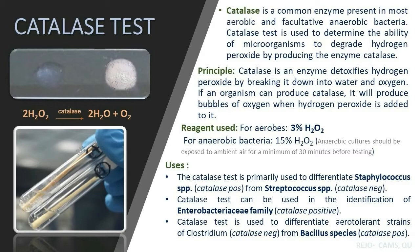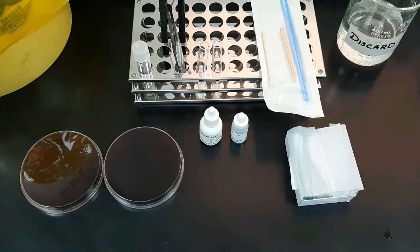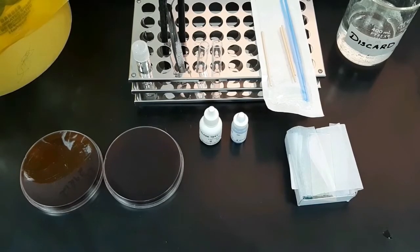The reagent used for the catalase test is 3% hydrogen peroxide for aerobic bacteria and 15% hydrogen peroxide for anaerobic bacteria. The catalase test is primarily used to differentiate Staphylococcus species from Streptococcus species. It can also be used in the identification of the Enterobacteriaceae family and to differentiate the aerotolerant strains of Clostridium from Bacillus species.